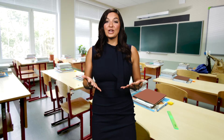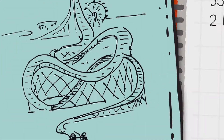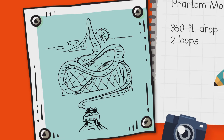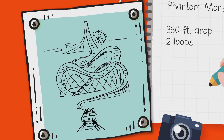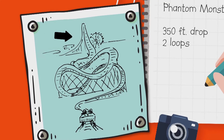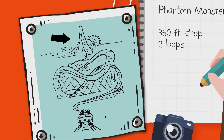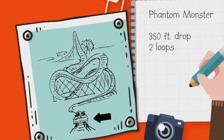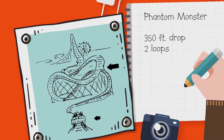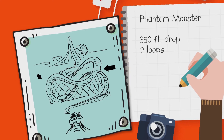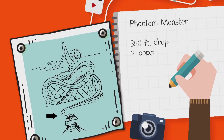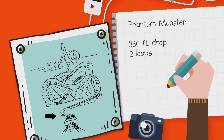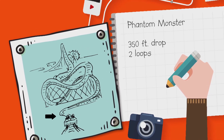Once you're done with your design, draw your coaster. Give your creation a name, and label the points that represent the terms you've learned so far: potential energy, kinetic energy, and friction. Note where energy is transferred, because remember — energy is never lost. Energy just changes forms.